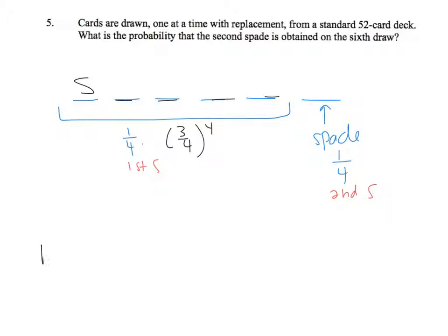So far, the probability of the second spade being on the 6th, I have 1/4 for my first spade, 1/4 for my second spade, and 3 over 4 to the 4th for those 4 non-spades.